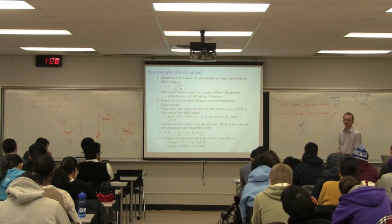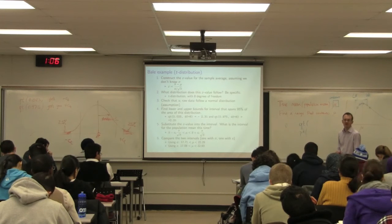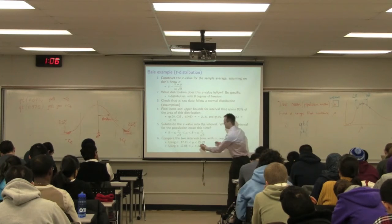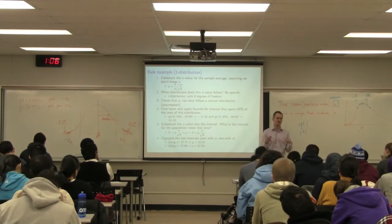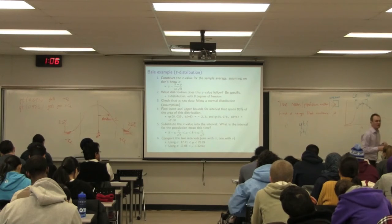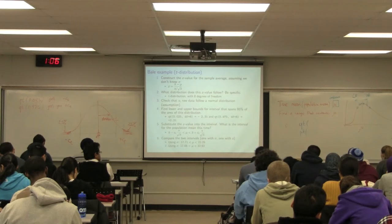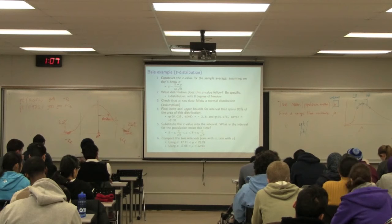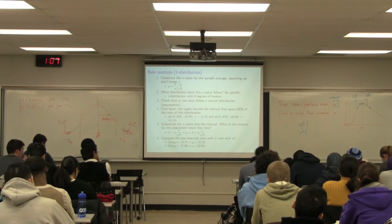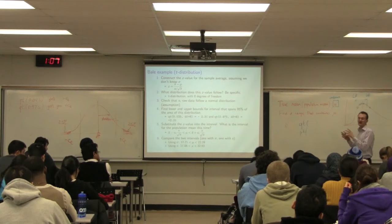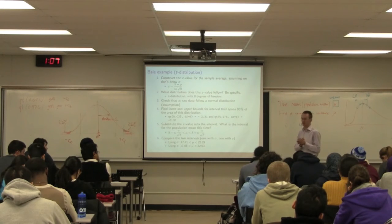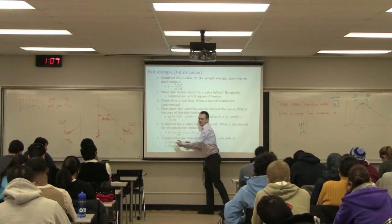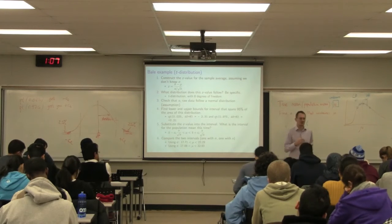The second interval — where sigma is replaced by s — is broader, and it must be. The range is broader because we have greater uncertainty: we do not know sigma. By replacing sigma with the estimated sample standard deviation s, we now have two sources of error: we're computing both x-bar and s from the sample data. So conceptually we expect a broader interval — we're saying we can't estimate the true population value quite as precisely.